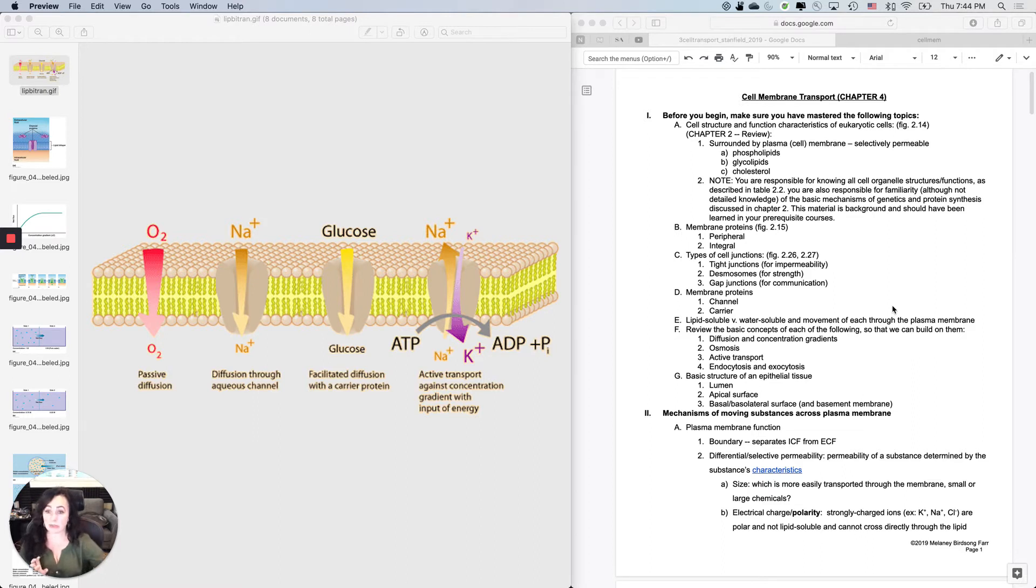This figure shows you a bunch of different things moving by different mechanisms. How do you predict which direction something's going to go? How do you predict whether it would use active transport, meaning ATP is required, or passive transport, meaning ATP is not required? How do you predict whether it would diffuse straight through the membrane or need a transport protein?